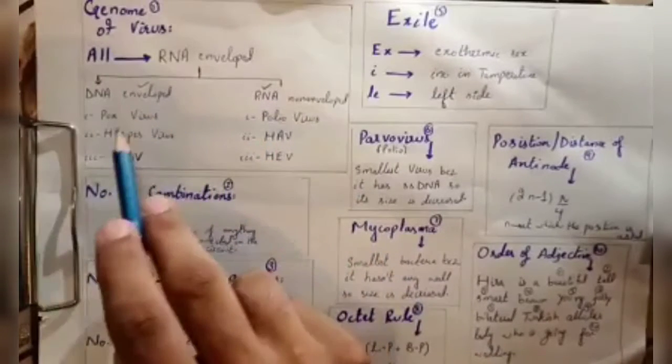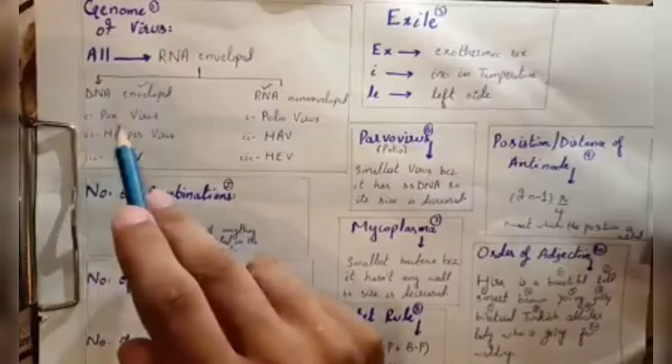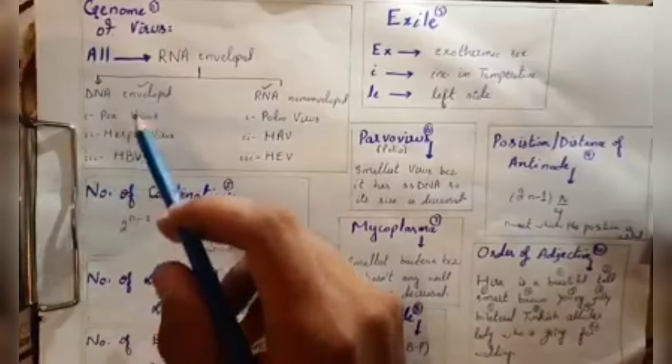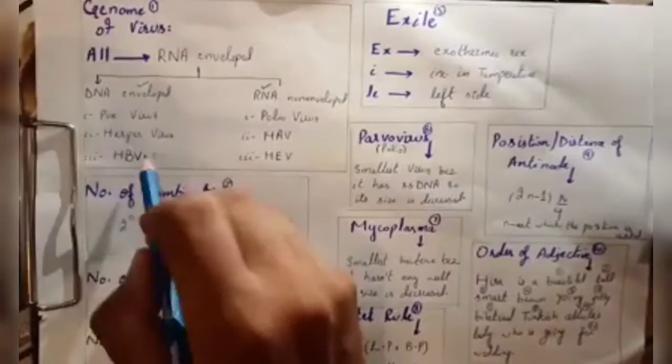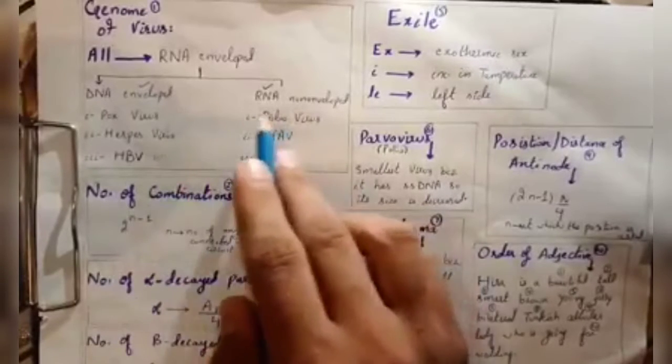In DNA enveloped viruses, we have viruses that act on our skin. Pox virus is also a skin virus. We have herpes virus and HBV. B is basically DNA, so these are DNA enveloped viruses. The other type is RNA enveloped.